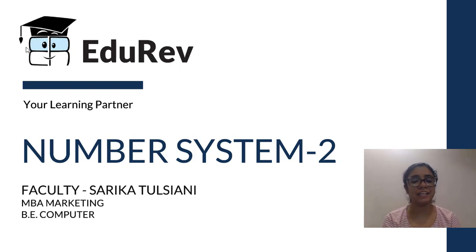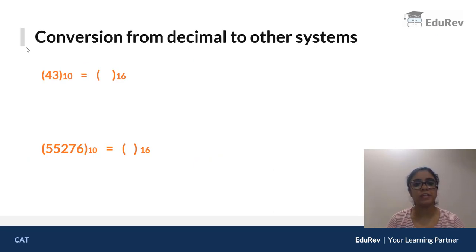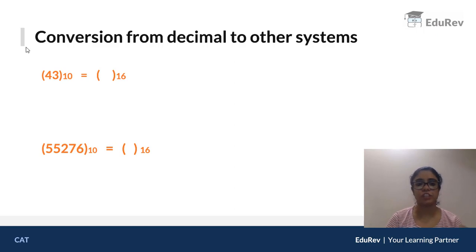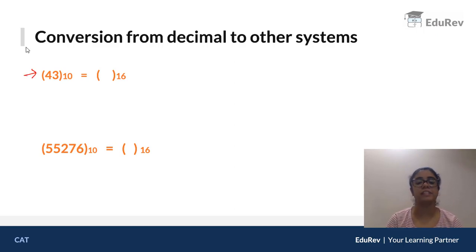Let's continue with our sums. This is what we were discussing in the previous video: conversion from decimal systems to other systems. Let's look at an example. The number given is in decimal — 43 to the base 10 — and we have to convert it to base 16, that is, the hexadecimal base.